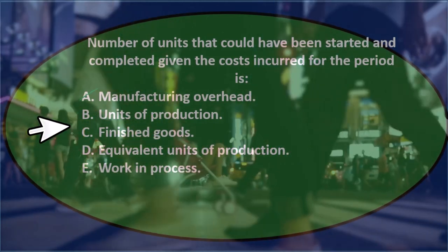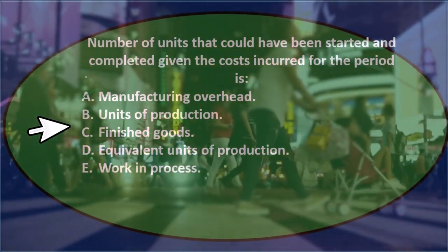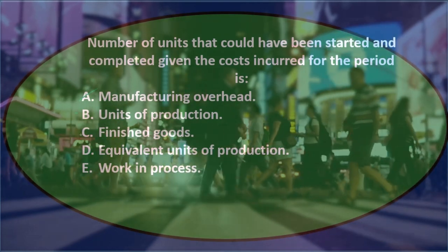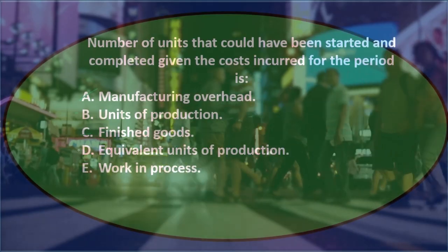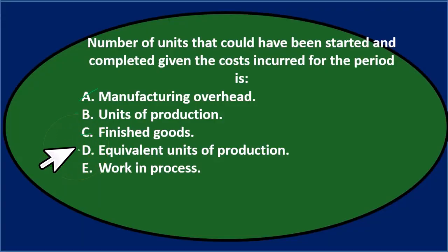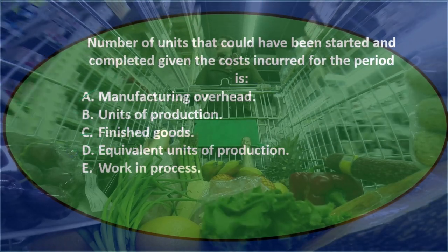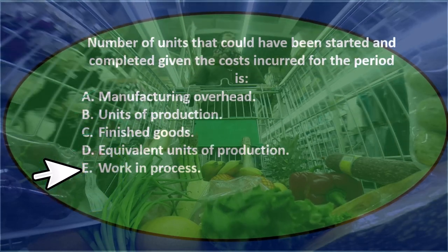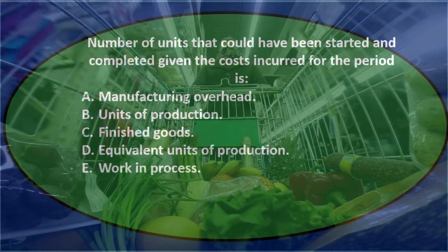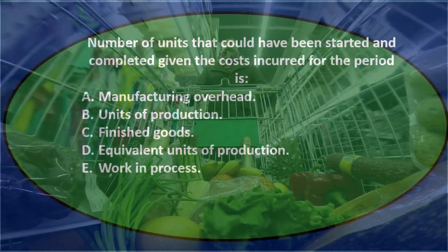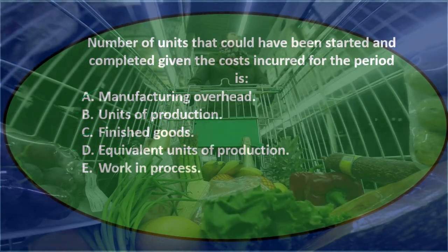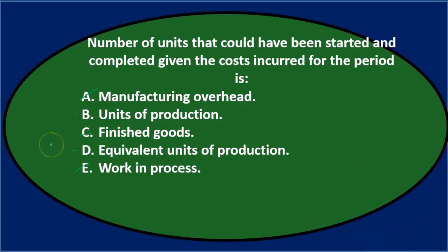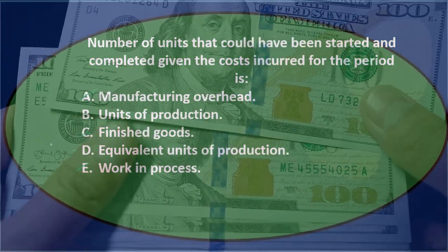Option C, finished goods — we have up here 'number of units that could have been started and completed.' Finished goods seems like it should be a set number rather than an estimate of what could have been completed, so I don't think it's C. Option D, equivalent units of production, sounds like a reasonable answer. Option E, work in process, tracks costs — overhead, conversion costs, direct labor, and materials — not really units. So we're left with B and D.